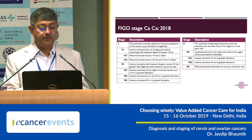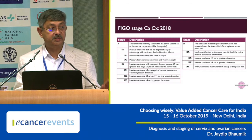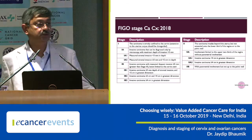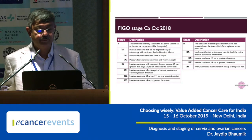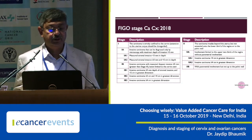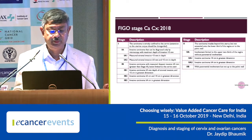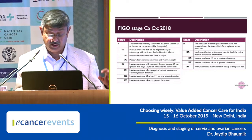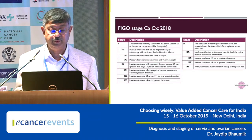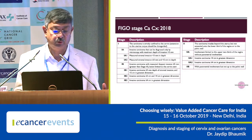In Stage 1 cervical cancer, it has been divided into Stage 1A and 1B. It is a disease limited to the cervix. Stage 1A is microscopic disease. Stage 1A is again subdivided into 1A1 and 1A2: 1A1 is less than 3 mm in depth of invasion, and more than 3 mm but less than 5 mm in depth of invasion makes it Stage 1A2.